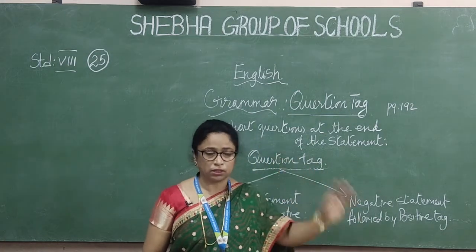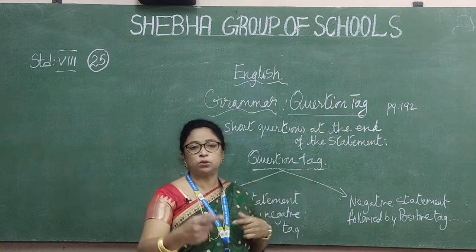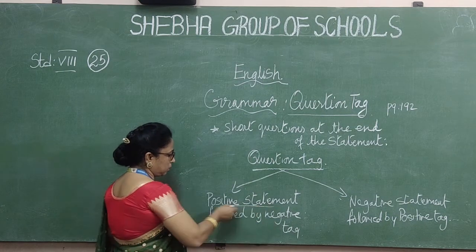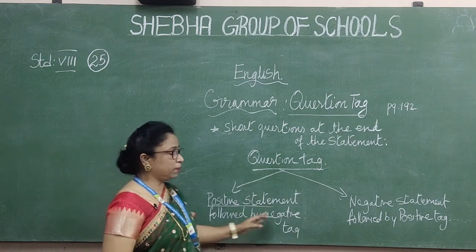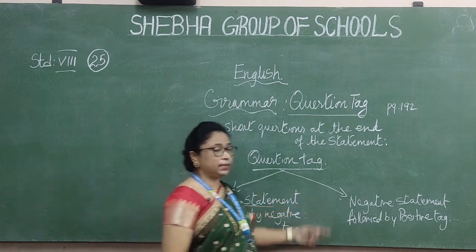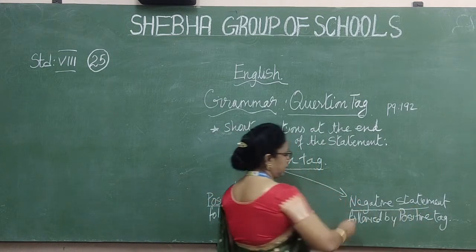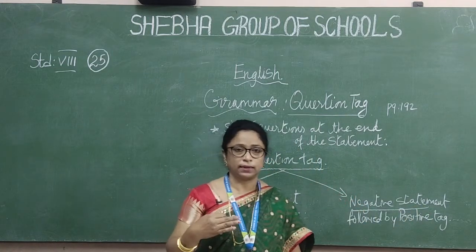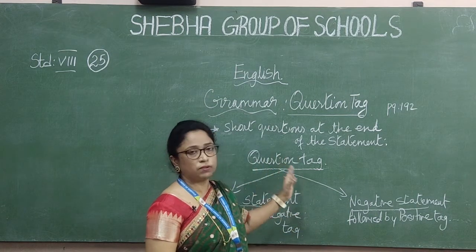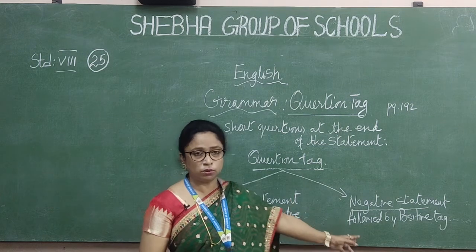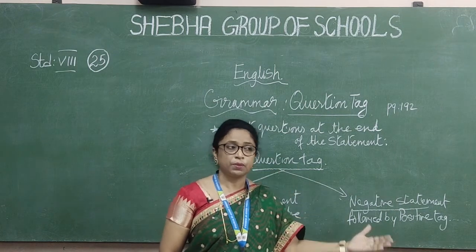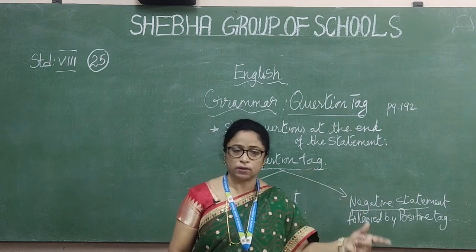Question tag is divided into two types. One is a positive statement followed by a negative tag, and the other is a negative statement followed by a positive question tag. So a positive sentence will have a negative tag, and a negative sentence will have a positive question tag.